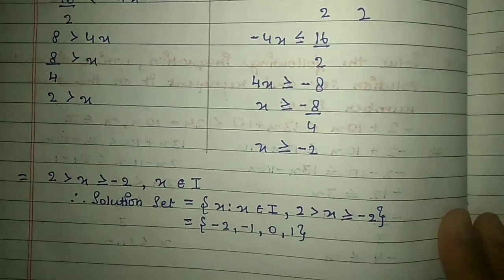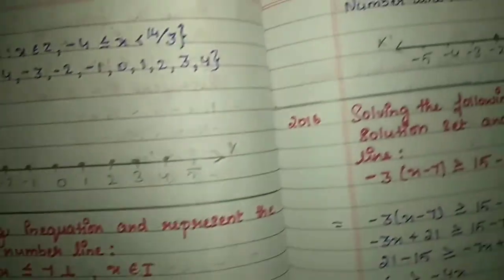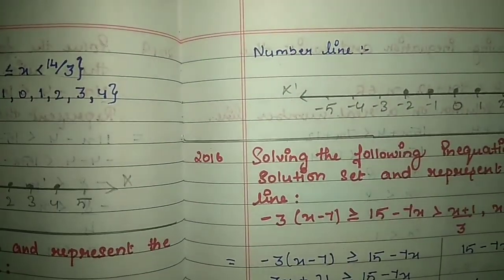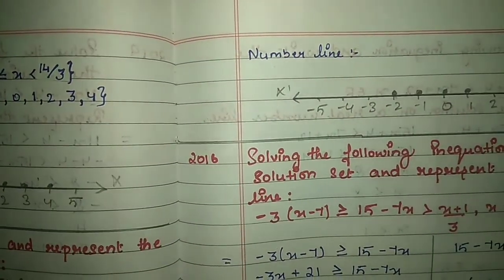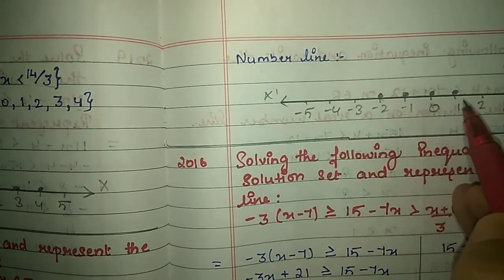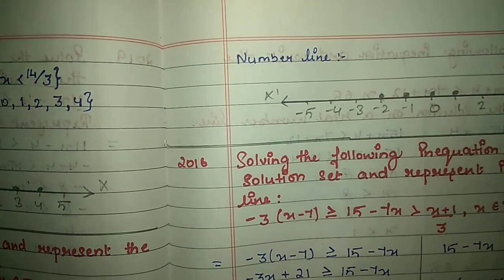Represent these integers on the number line. Draw a number line with pencil and scale, mark both side arrows, and mark these points.